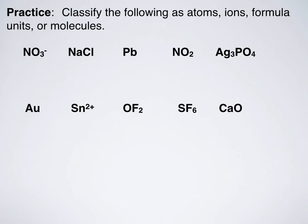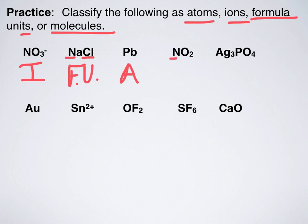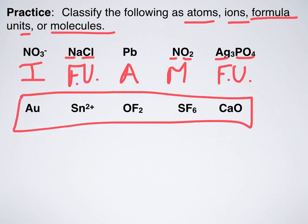So test this out and see if you can identify which of the following are atoms, ions, formula units, or molecules. We're going to do the first line together, and then fill in the last line, and we'll see whether or not you did those correctly tomorrow. So I have nitrate, NO3 minus, that is an ion. NaCl, that is a metal and a non-metal, that is a formula unit. Next up, I've got Pb, that is an atom. NO2, I have nitrogen, I have oxygen, that is a molecule. Next up, I have silver and I have phosphate. So I have a metal, I have our non-metal anion group, that is a formula unit. So see if you can do this last line on your own. And that's it.